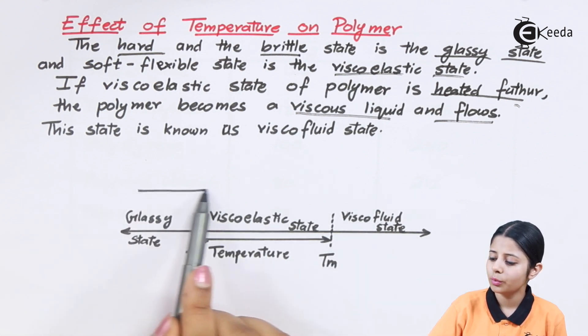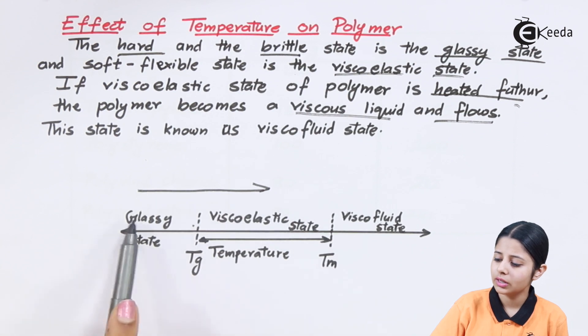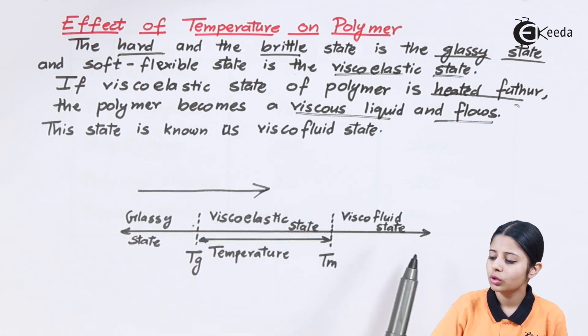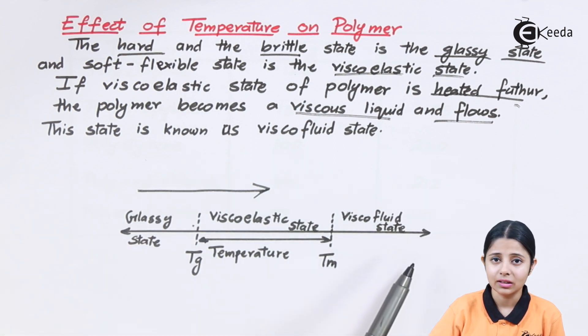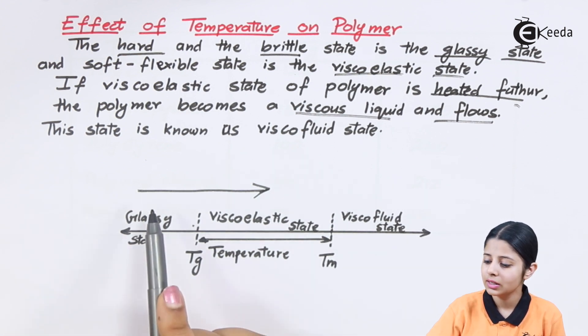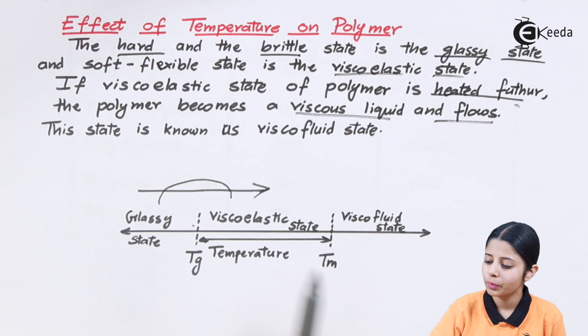When you're moving from the glassy direction to the viscofluid direction, you are applying heat. Whenever you apply heat, the glassy state will change to viscoelastic state. The viscoelastic state will change to viscofluid state.